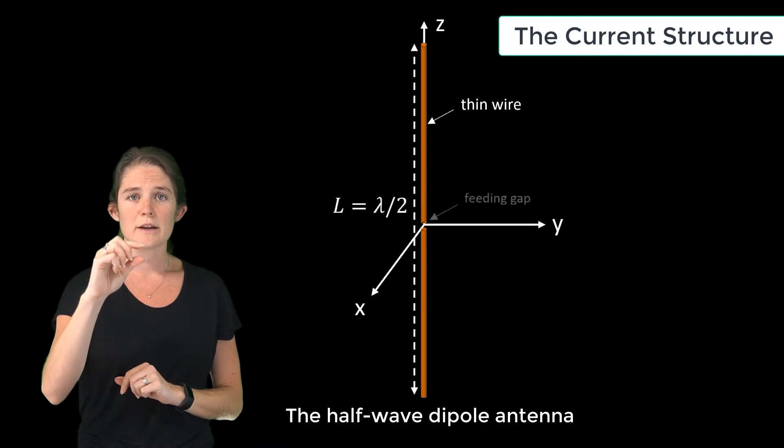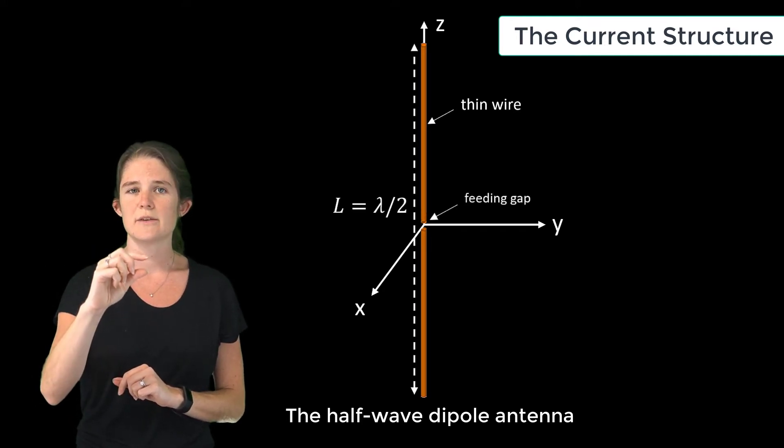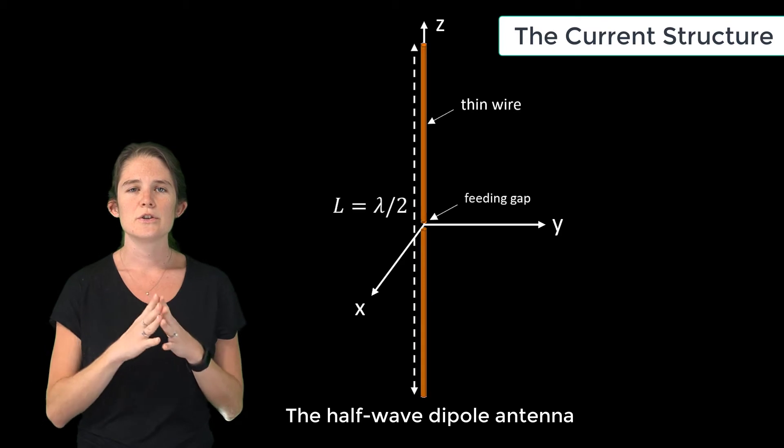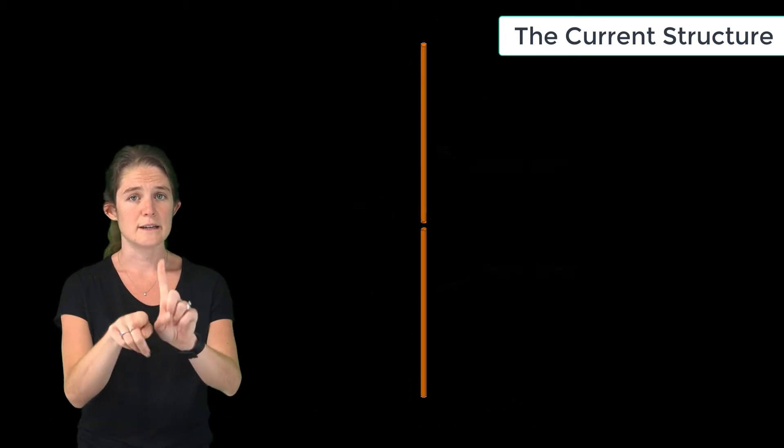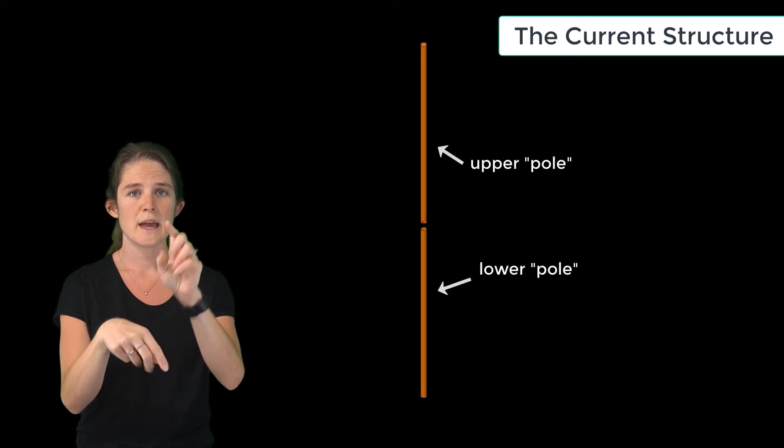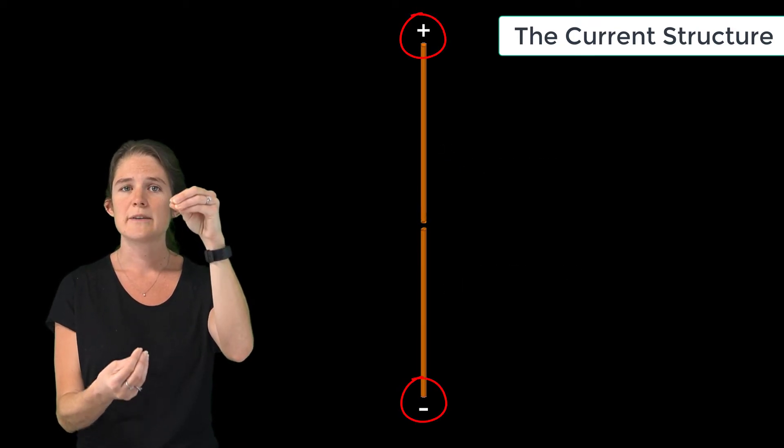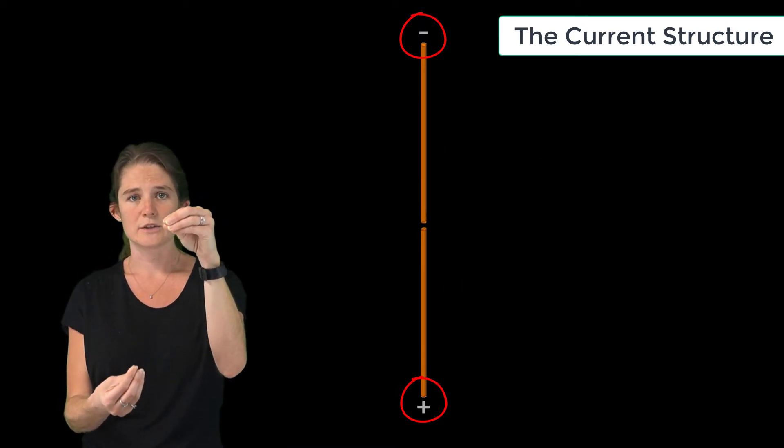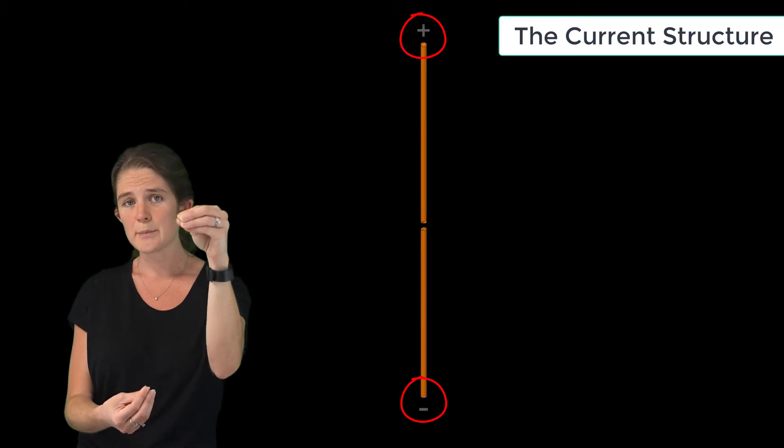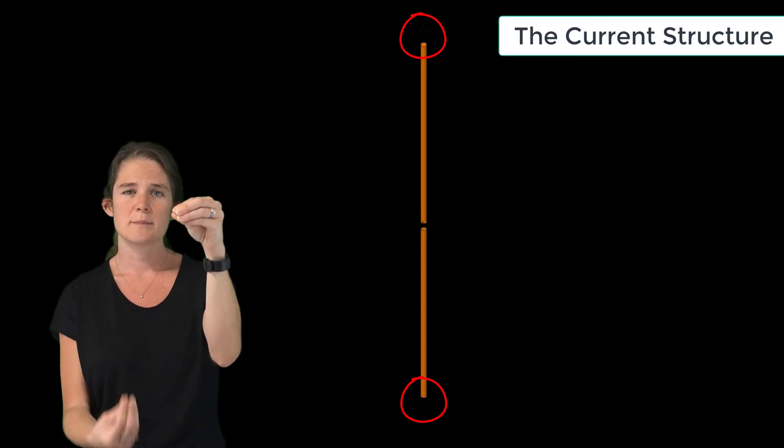The gap is introduced halfway along the antenna's length. You'll note that this gap splits the antenna into two poles, and at the ends of these two poles, as we'll see in a moment, we end up having alternating opposite electrical charges.